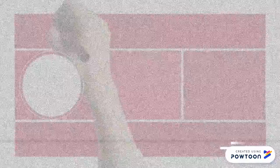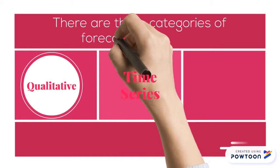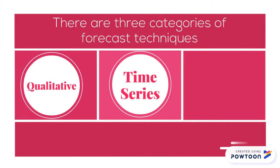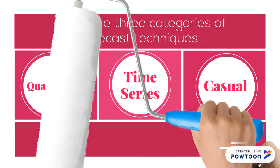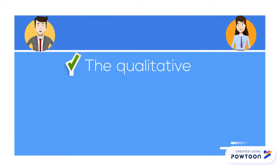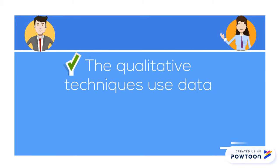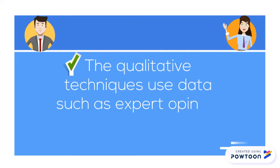There are three categories of forecast techniques: 1. Qualitative, 2. Time Series, and 3. Causal. The qualitative techniques use data such as expert opinion and special information to forecast the future.